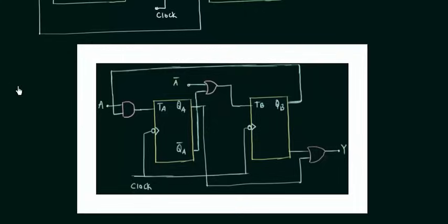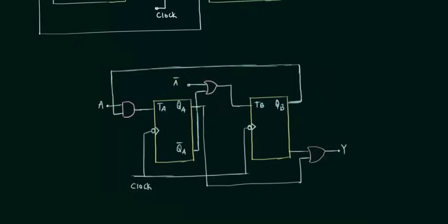This is the same example from the previous lecture and the change that I am going to make in this circuit is to make this output Y the function of A. So I will take this A from here and I will give it to this OR gate.